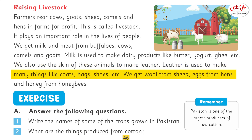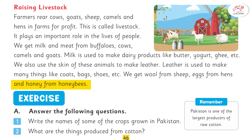Leather is used to make many things like coats, bags, shoes, etc. We get wool from sheep, eggs from hens, and honey from honeybees.